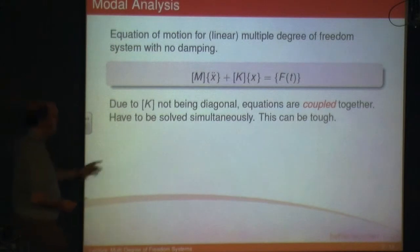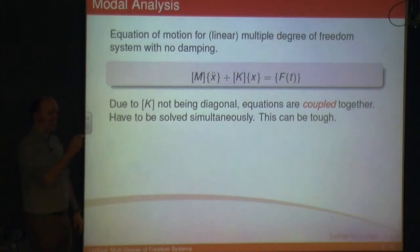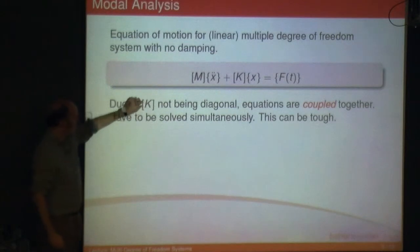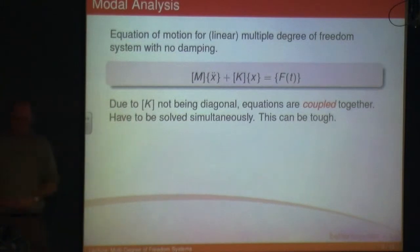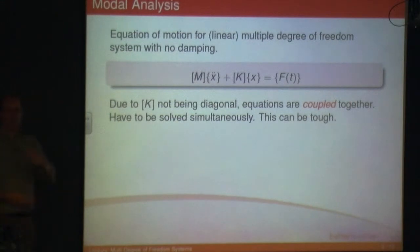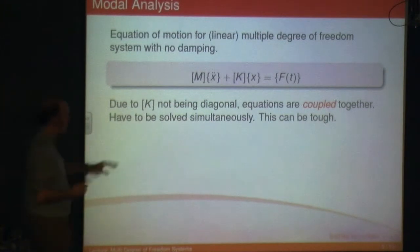The problem is K is not a diagonal matrix. A diagonal matrix means there are only terms in the diagonal of that matrix. All the other terms not on the diagonal — if you've got a spring between the masses, there's going to be a value in that term; it's not going to be zero. So K is not diagonal, and that means that the motion of the different masses in your system are coupled together. The motion of mass 1 will be affected by the motion of mass 2, the motion of mass 2 might be affected by the motion of mass 3, and so on.